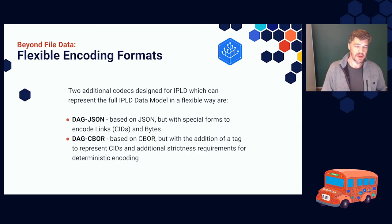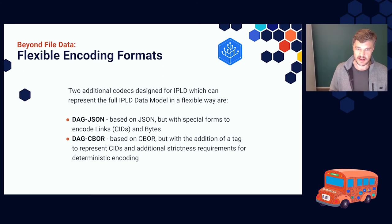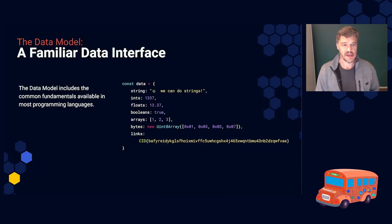Now, beyond DAG PB, two additional formats that currently exist in IPLD and there will be more, that use the data model in a flexible way, not this fixed schema way. DAG JSON, which is based on JSON, but it has special forms inside it to deal with links and bytes. I can show you that a little bit in a minute. And DAG CBOR. CBOR is a great format because it's actually really efficient, efficient to create and use. It's much smaller than JSON. But we use CBOR with some strictness rules and we added a TAG to represent CIDs. So let's have a look at what this means.